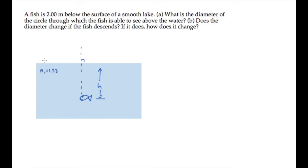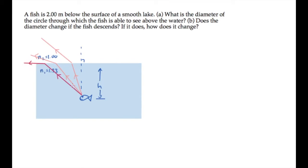Given the two indexes of refraction shown here, we can trace some rays as the fish looks at increasingly large angles from the vertical. N2 is less than N1, so the rays are refracted away from the vertical, and there comes a critical angle where the ray is refracted straight along the surface of the water. If the angle increases any more, it will be totally internally reflected and the fish won't be able to see out of the water. This happens in all directions, so that viewed from above it makes a circle.